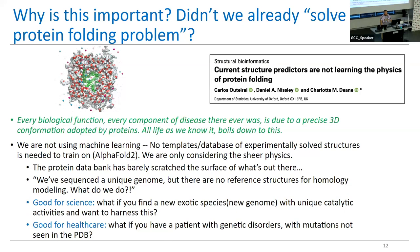Why is this important? Didn't we already solve the problem? No, we didn't. Programs like AlphaFold were trained on the Protein Data Bank, a database of 200,000 proteins, which is a relatively small amount compared to all the biodiversity out there — we've sequenced somewhere around 300 million genomes. These programs don't know what to do when you give them an anomaly like a mutation. This is important for science and for healthcare: patients with rare genetic disorders have mutated proteins, meaning these programs can't provide an accurate representation, making it hard to design targeted therapies.